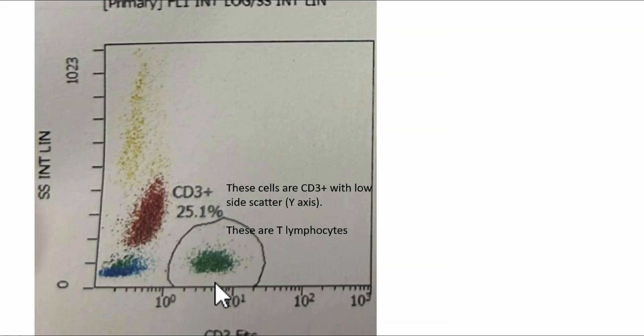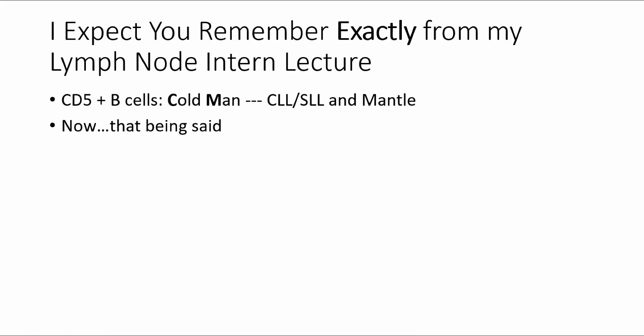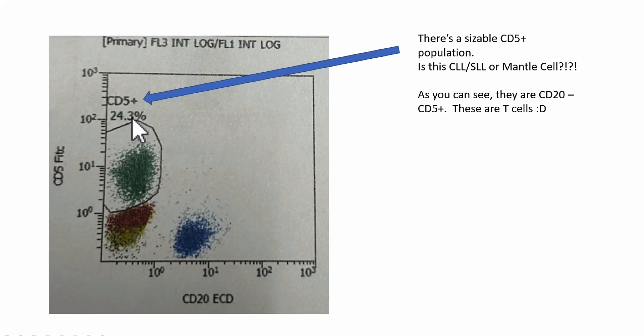Now, let's talk about these cells. These gated cells are CD3 positive. They have a small low side scatter. So these are T lymphocytes. Now, I had a funny mnemonic for CD5 positive, CD10 negative B cell neoplasms. The mnemonic cold man. Why? Because C in cold is CLL-SLL, and man is mantle cell lymphoma.